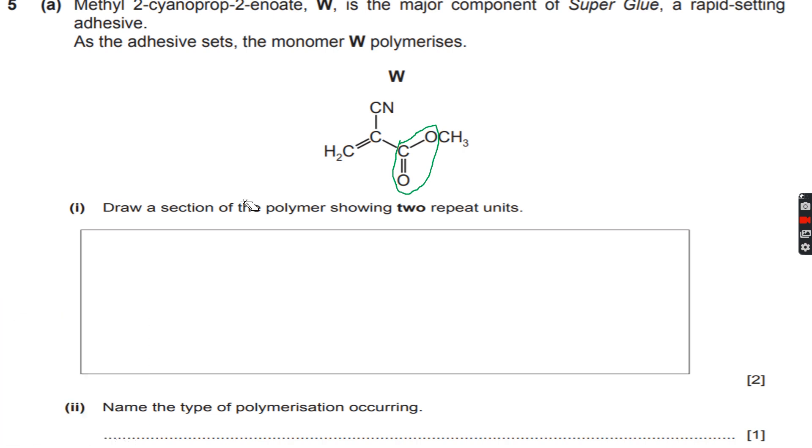So that means there is no condensation polymerization happening. However, we can see that we have an alkene, a carbon-carbon double bond over here, which means that addition polymerization can take place.